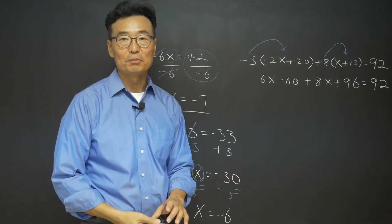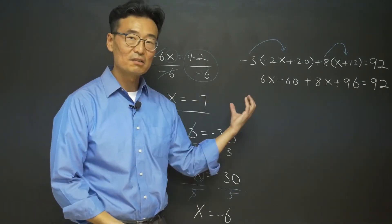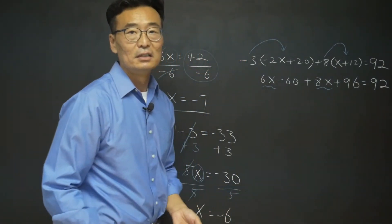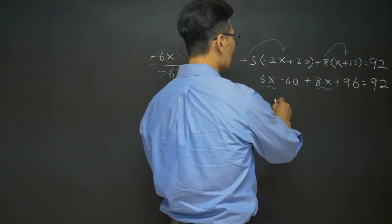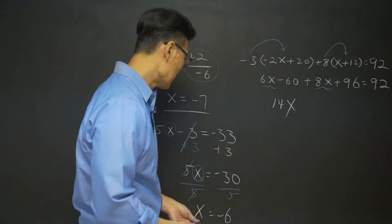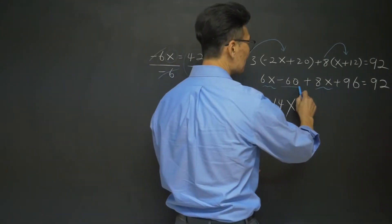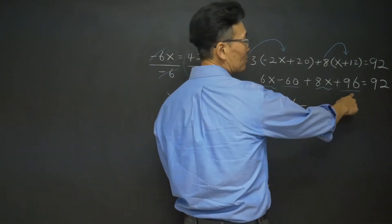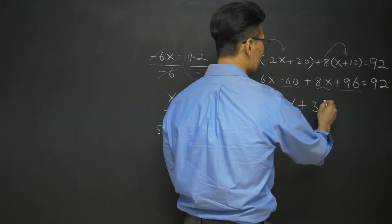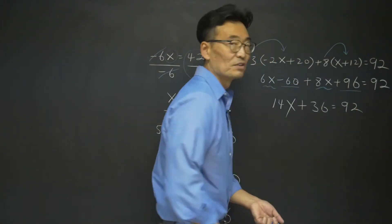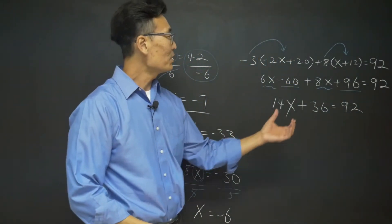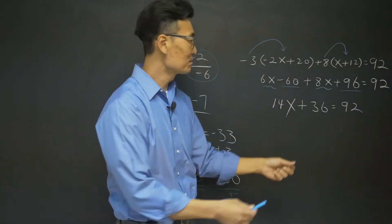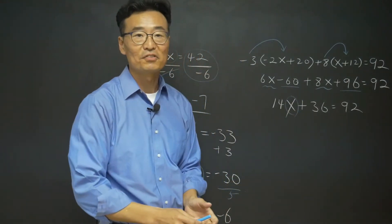Next we combine like terms on the left side. Adding 6x and 8x gives us 14x. Combining negative 60 and positive 96 gives us positive 36. So we have 14x plus 36 equals 92. Now that the left side is simplified, we start solving for x.